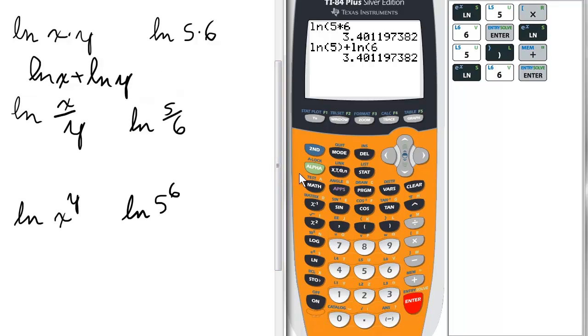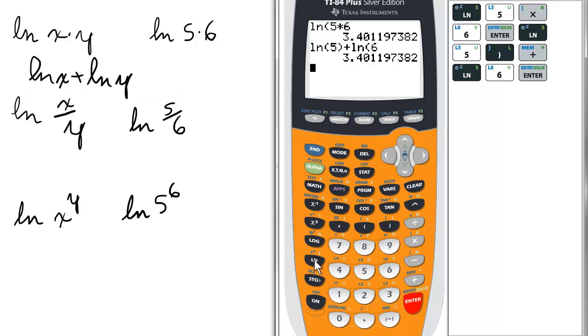Now, I do want to show you a mistake a lot of students are going to make. They're going to type ln of 5, and without closing parentheses, they're going to say, plus ln of 6. Wrong answer.